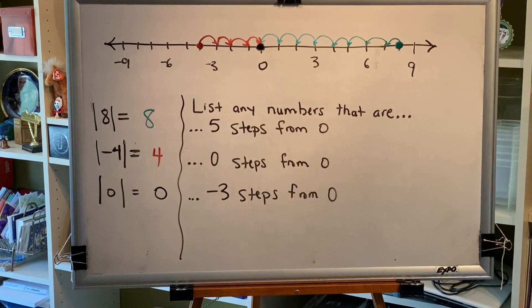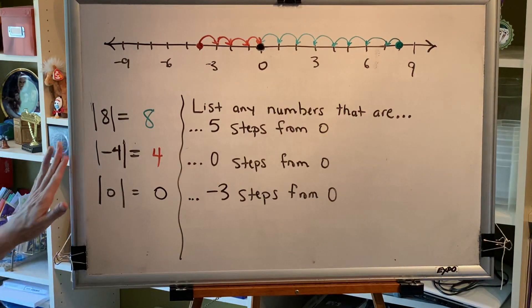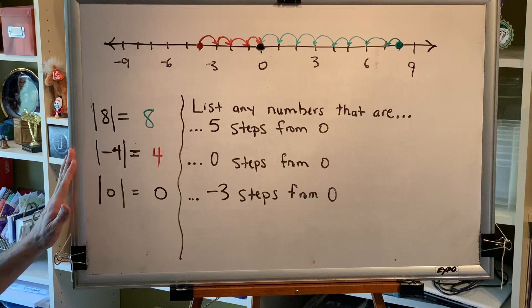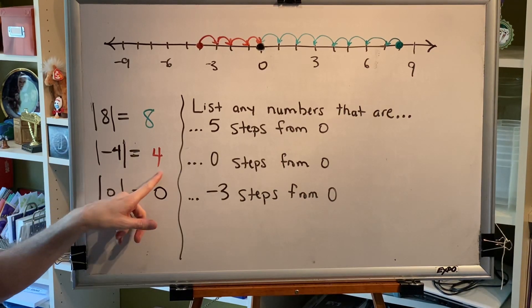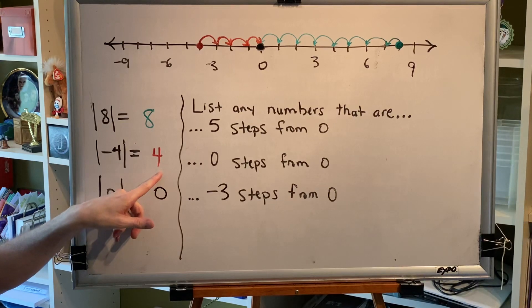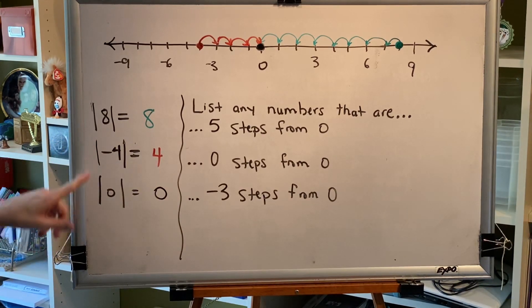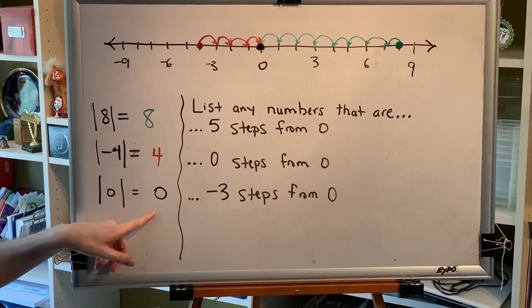Now, you might have noticed or learned previously an important pattern with absolute value. When you take the absolute value of a negative value, it becomes the positive version of that number. But when you take the absolute value of zero or a positive value, it stays the same.